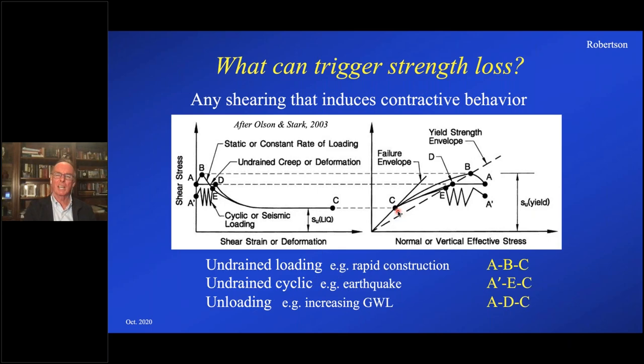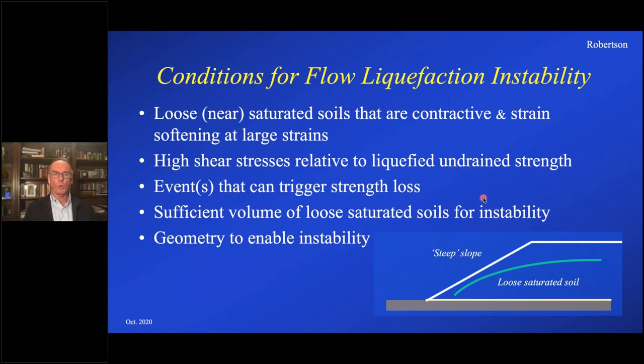So the warning is that there are many different stress paths. But what's common is that they all approach critical state with generally a decreasing mean effective stress. What are the conditions for flow liquefaction to actually create instability? You have to have a number of things happen. First, you have to have loose, saturated or near-saturated soils that are contractive at large strains and are strain softening. Not all contractive soils are strain softening — it's that combination of saturated, contractive, and strain softening at large strains.